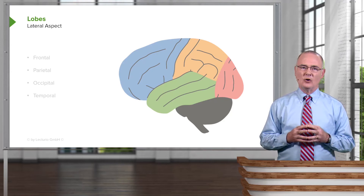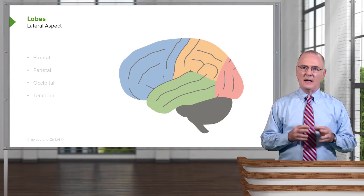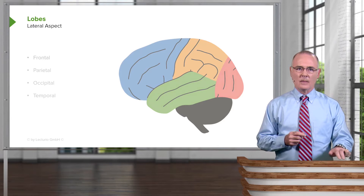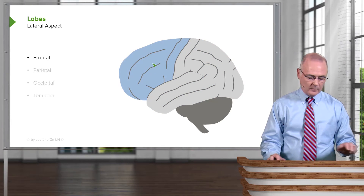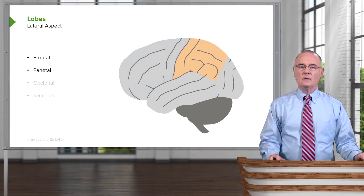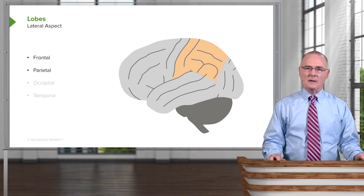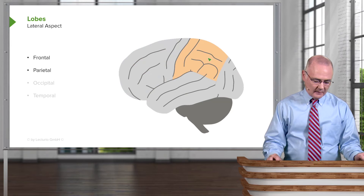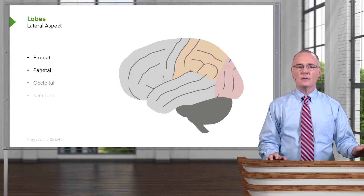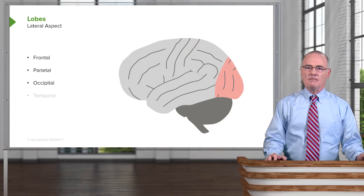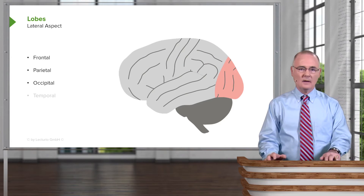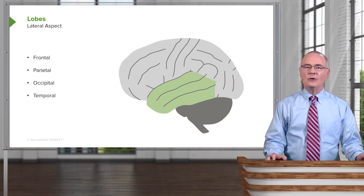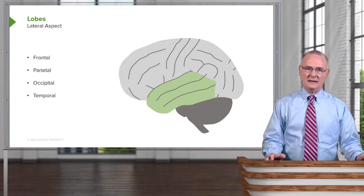Here we have a lateral view of the four lobes shown in different colors. First, in blue, we see the frontal lobe. Located posterior to the frontal lobe and highlighted is the parietal lobe. Then we see the occipital lobe highlighted in red on the posterior aspect of the cerebral cortex. Lastly, in light green, the temporal lobe is identified.